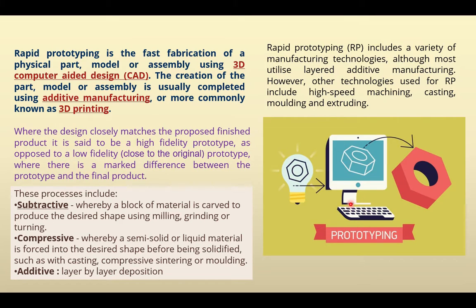Rapid prototyping — go to the dictionary and find out the meaning of 'rapid' and you'll get a clear idea. As the image shows, we are going to create the physical part, model, or assembly of any 3D element using 3D computer-aided design (CAD) modeling. If you have any idea, you can create it in the system using software — most probably AutoCAD or Pro/E — or any software provided by the rapid prototype equipment manufacturer, or free networking software.